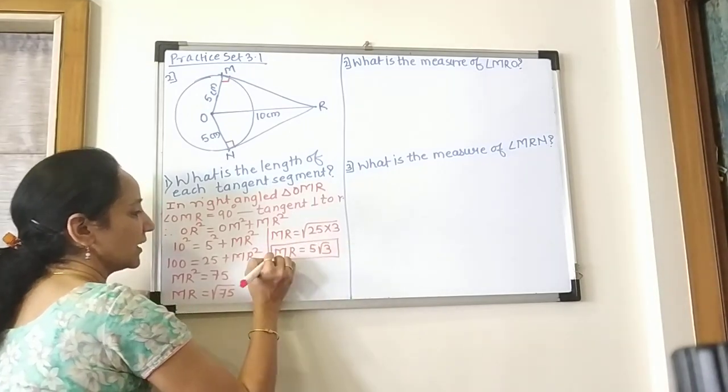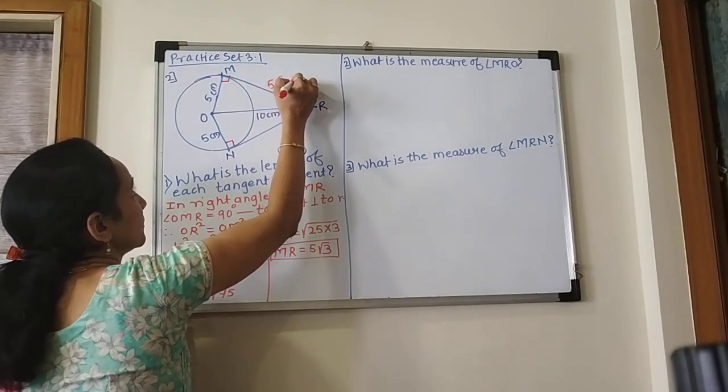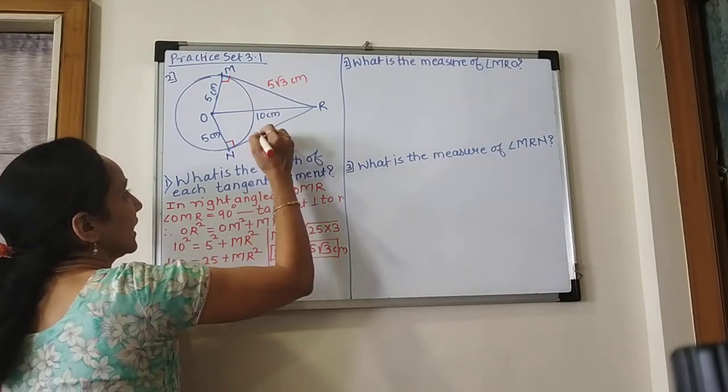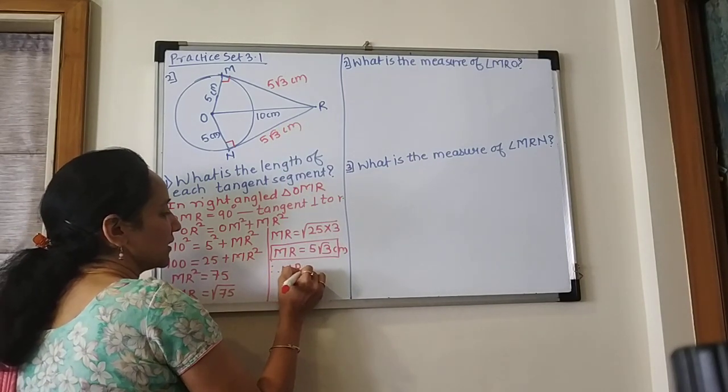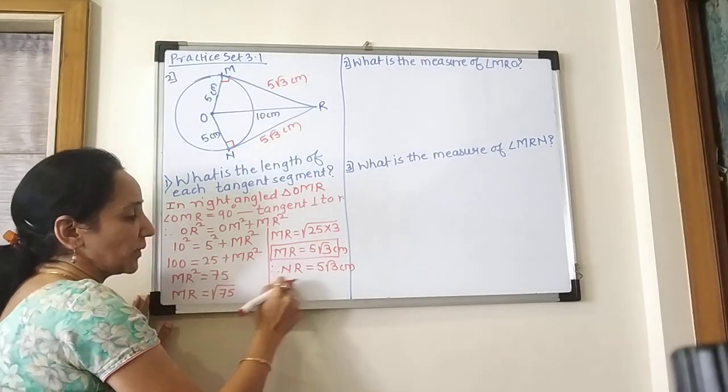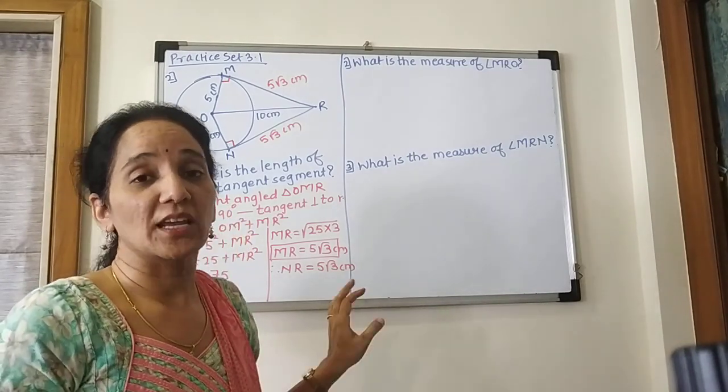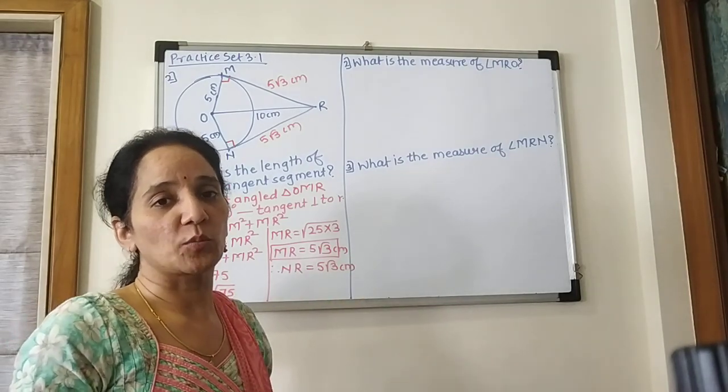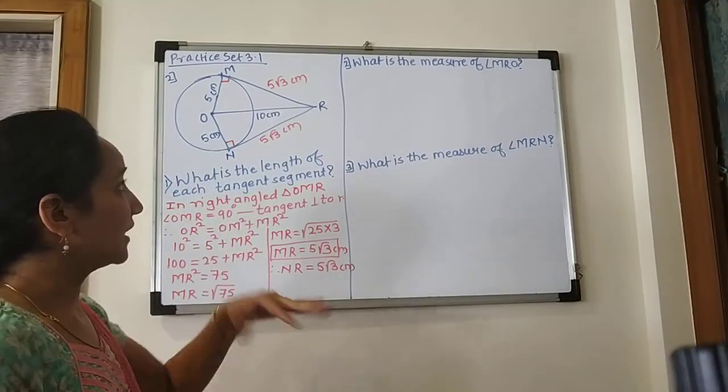So MR is equal to 5 root 3. Therefore, MR is equal to 5 root 3. You have to know that tangents drawn from one point are equal in length. So NR will also be 5 root 3.